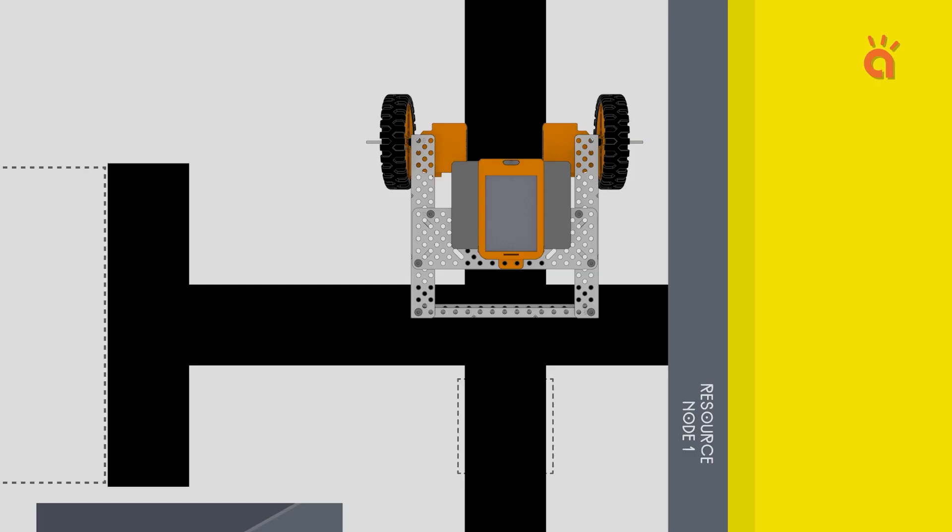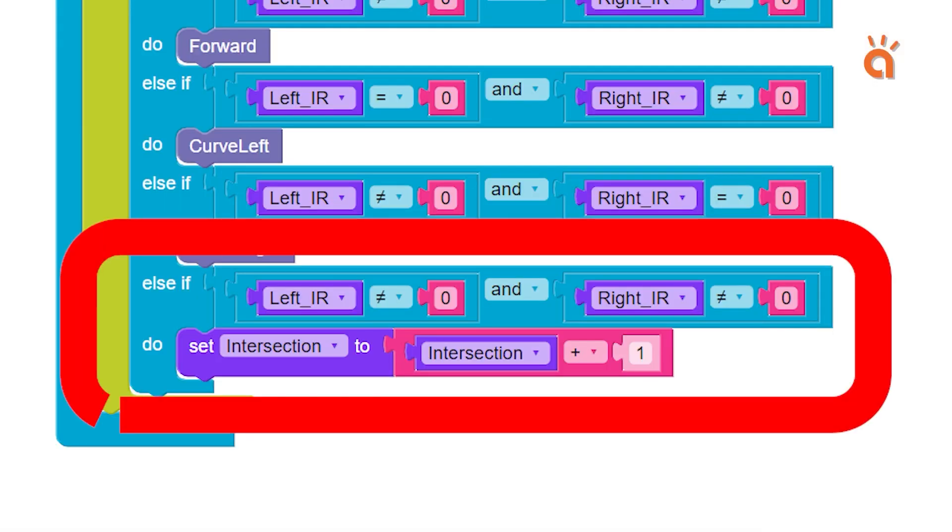Next, if the sensor detects a black intersection, the robot will perform different actions based on the intersection number. So first, we will increment the intersection counter by one each time the robot detects a black intersection.